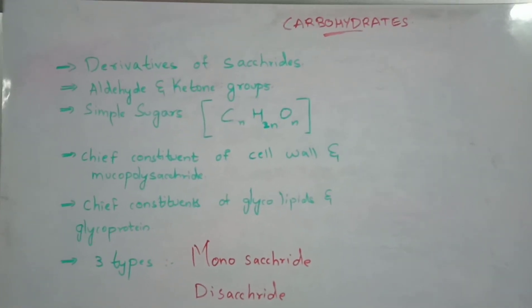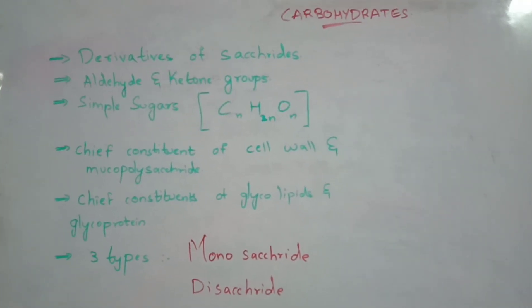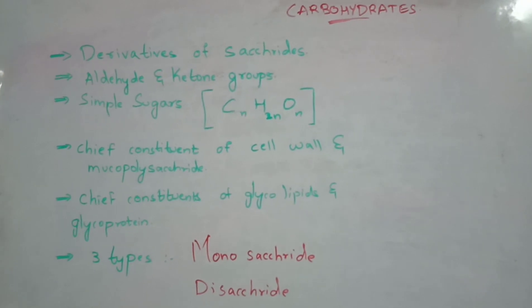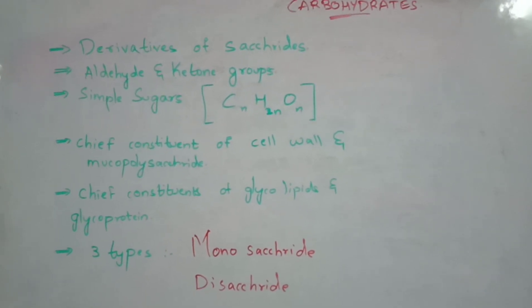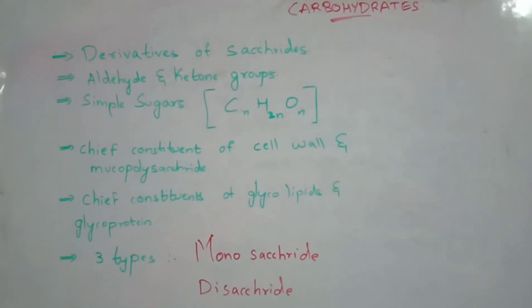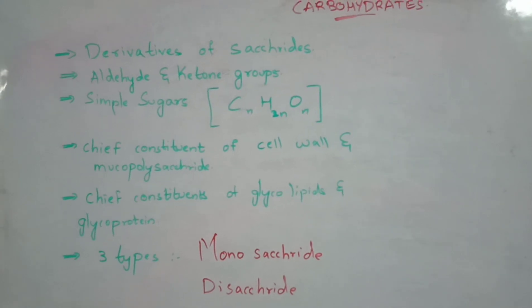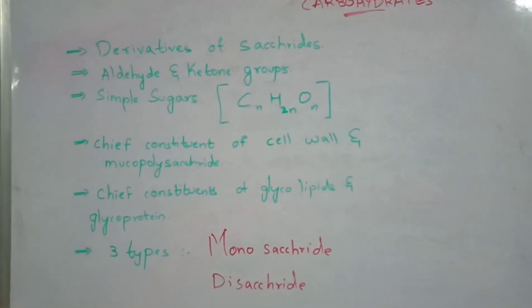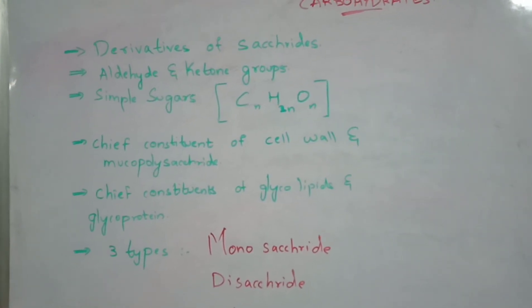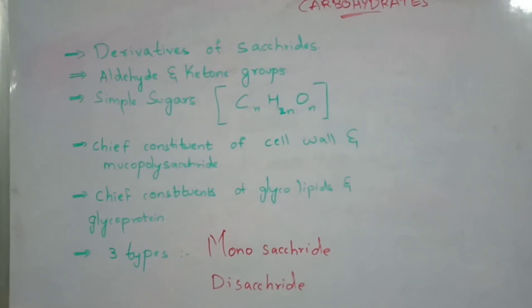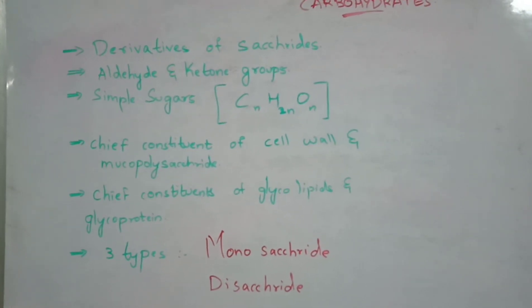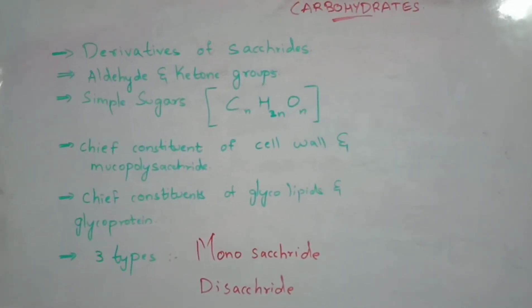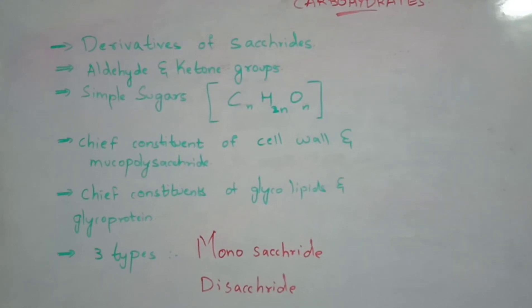This is the first video on carbohydrates. Normally, carbohydrates are the derivatives of saccharides. Saccharides are nothing but sugars — if you take any sugar like glucose or sucrose, those are saccharides. Coming to the second point, carbohydrates consist of aldehydes and ketone groups.